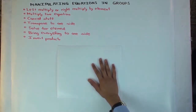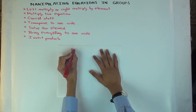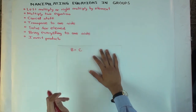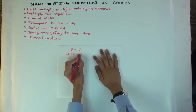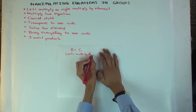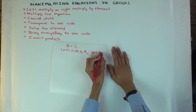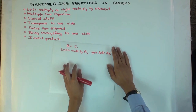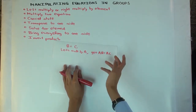Let me explain what I mean by left multiply. If I have an equation of the form B equals C, where B and C may not be single letters — they may be huge expressions — what do I mean when I say left multiply by A? I just multiply by A on the left on both sides, so I get AB equals AC. The crucial thing is that I put A on the left on both the left side and the right side. I couldn't write AB equals CA because you don't know about commutativity.